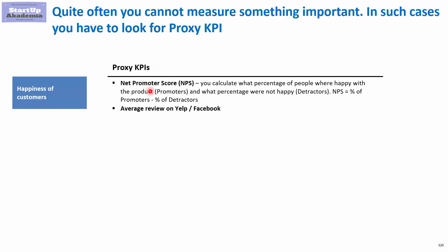One of the ways to treat it is to look at something called Net Promoter Score. This is a KPI constructed in such a way that you deduct from the promoters — the percentage of people who are happy with your product — the detractors, so people who are not happy with your product. You can obviously also look at the average review, for example on Yelp and Facebook.